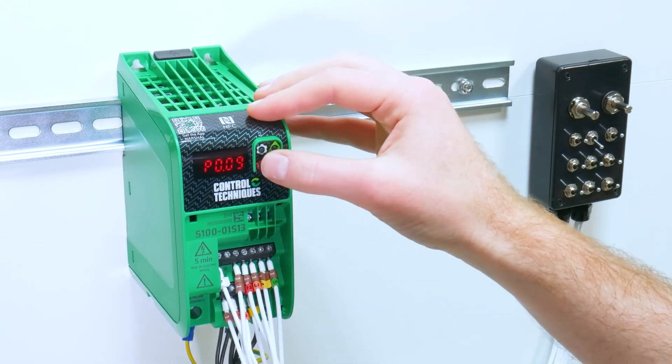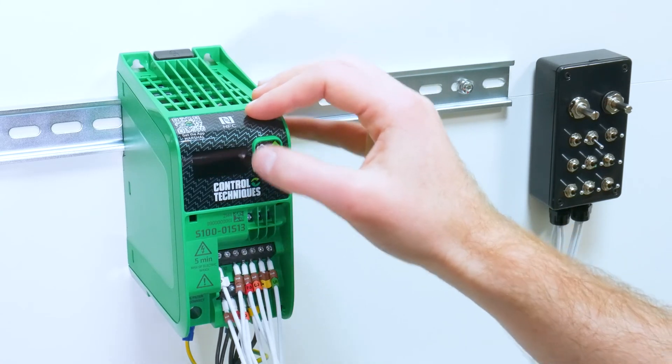Parameter 10 is our run stop configuration, and a setting of 1 means enable run forward and run reverse.